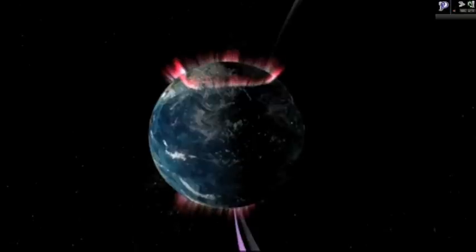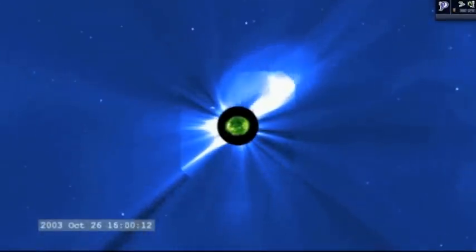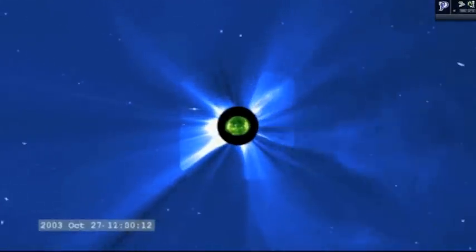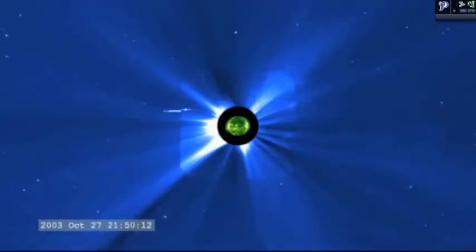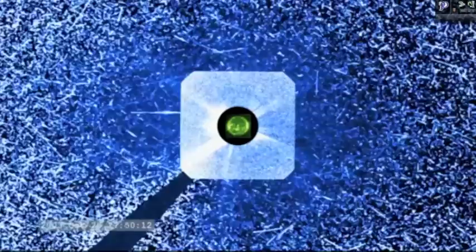Despite decades of observations with NASA's heliophysics fleet of spacecraft, the details of the connection between activity on the Sun and its effect on Earth has been poorly understood. This is because CMEs change while traveling from the Sun to Earth, and it's difficult to track their movement with only a head-on perspective.